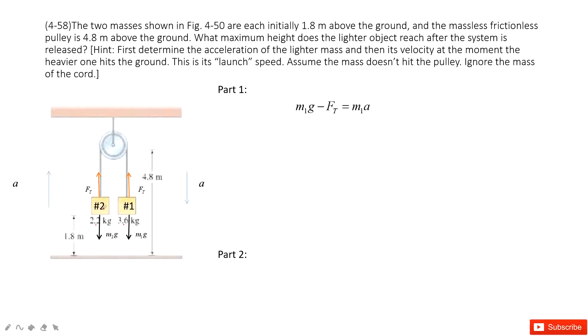So for part 1, this one, we can see the number 1 acceleration is down. So m1g minus the tension equals mass 1 times acceleration. And for number 2, Ft minus m2g equals m2 times acceleration. And then we can solve these two equations and get the acceleration for this system.